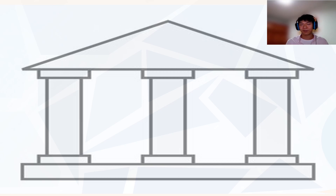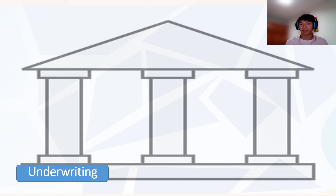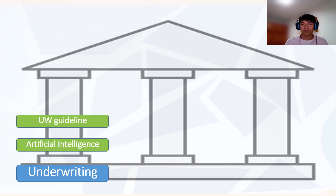POP is structured on three bases. The first base is built on the underwriting process. We can use artificial intelligence to create a sophisticated underwriting guideline, which can accept people from risk groups, of course, to a certain extent.